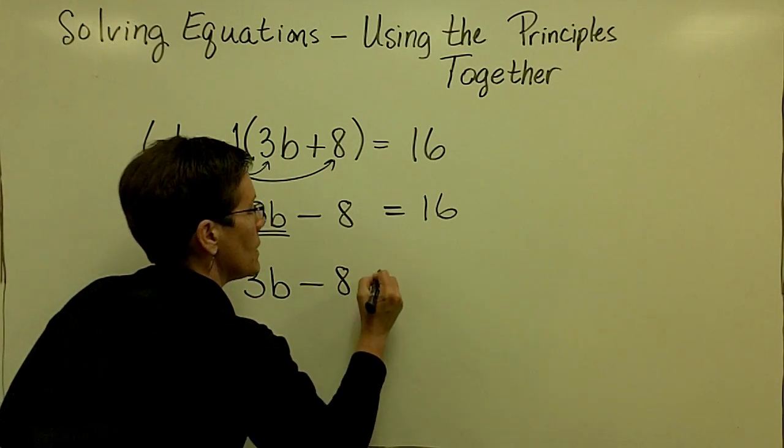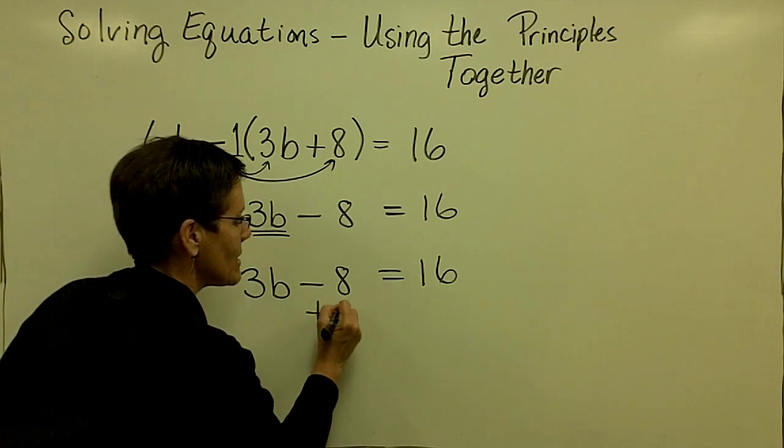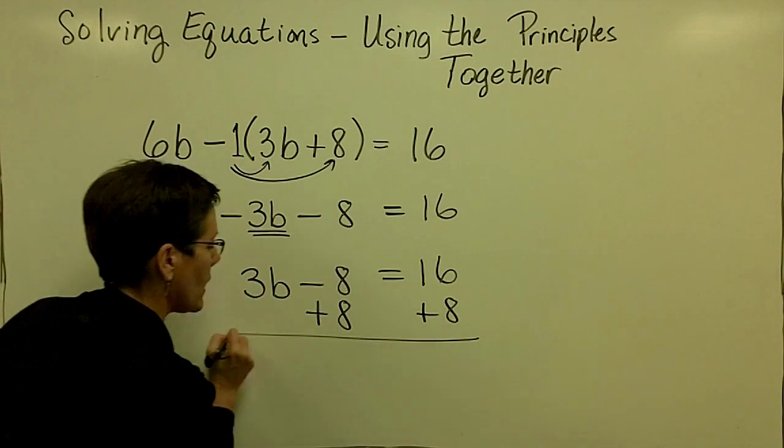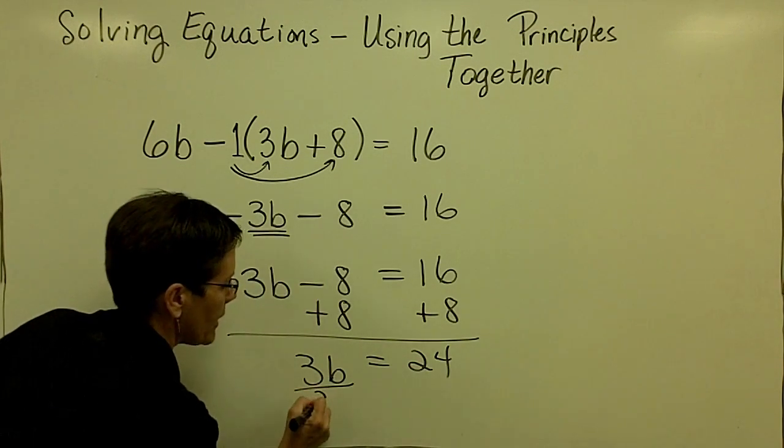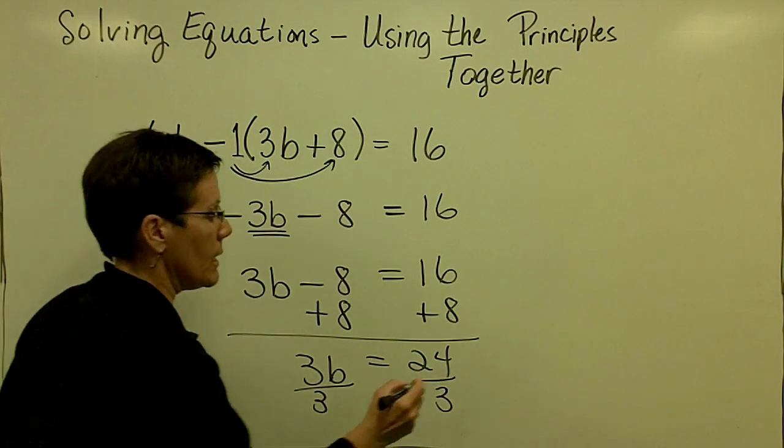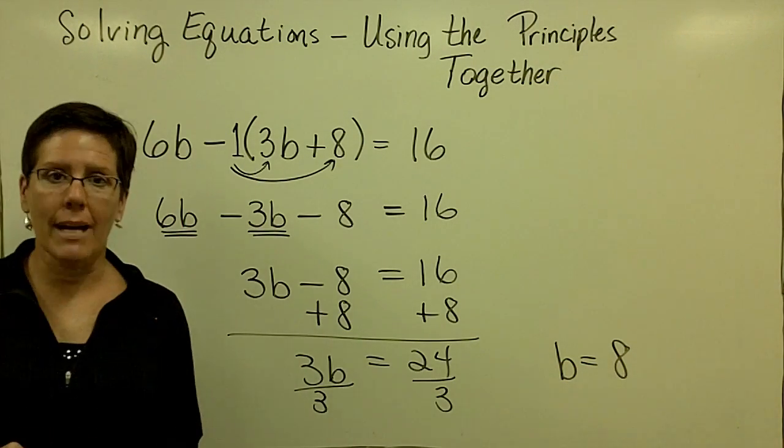And then I'm going to go ahead now and isolate the variable B by adding 8 to both sides of this equation. And then finally, dividing both sides by 3 and finding out that B has a solution of a positive 8.